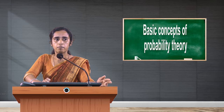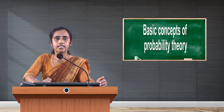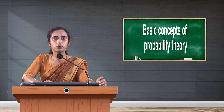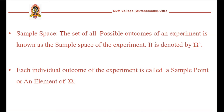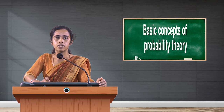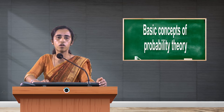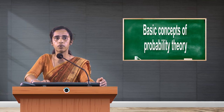Before going to pure probability theory, we have to know the supportive definitions which come under probability. The first one is sample space. The set of all possible outcomes of a random experiment is known as the sample space of the experiment, denoted by omega (Ω). Each individual outcome of the experiment is called a sample point, or an element of Ω.